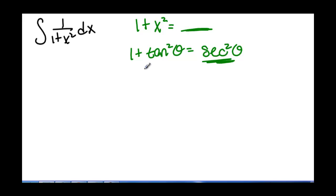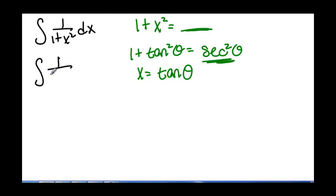So if we let x equal tangent of theta and use this substitution, then we have the integral of 1 over 1 plus tangent squared of theta. And then we have this dx — remember that when we do substitution, we also have to substitute in for our dx.